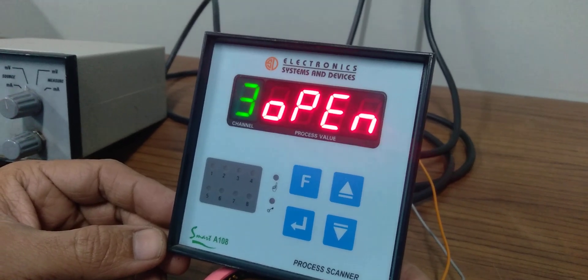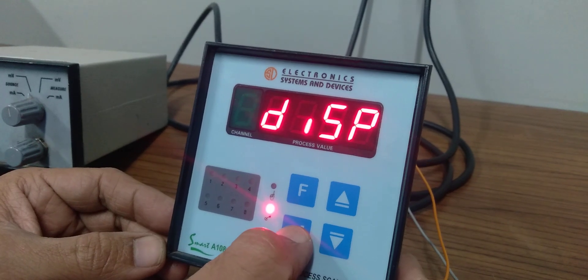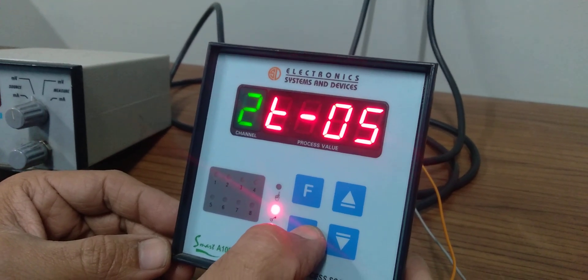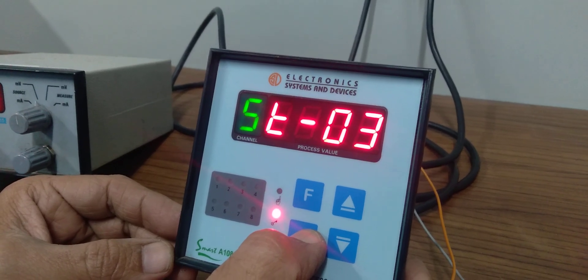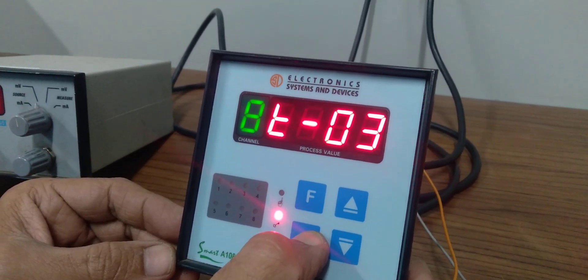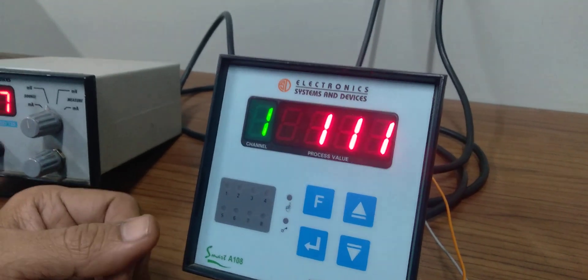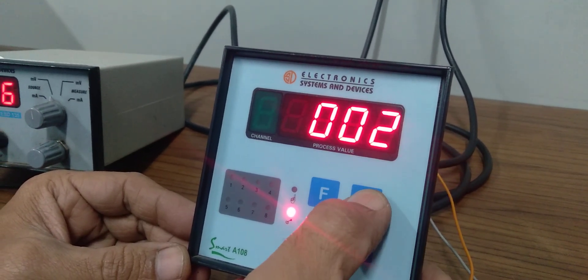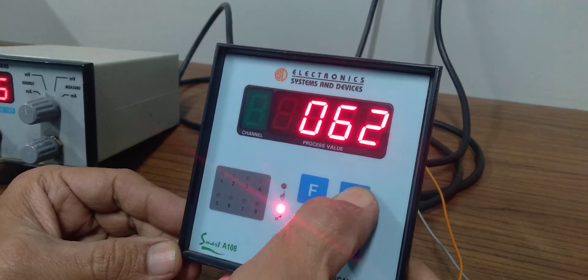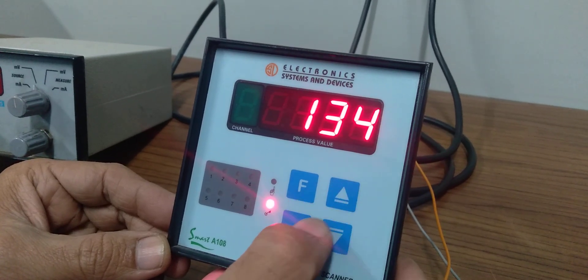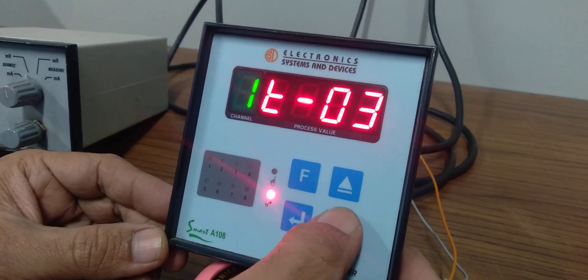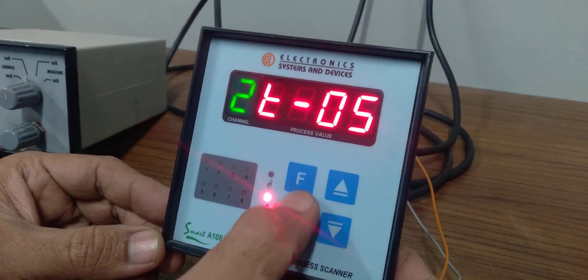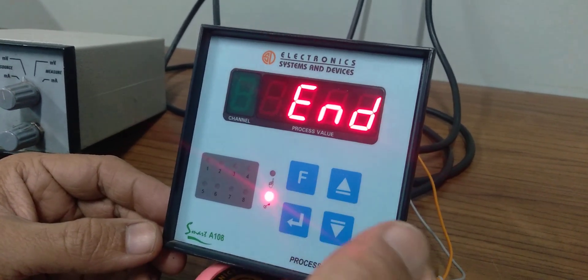We'll see the display times now. In the display option, you can set the time for each channel, how many seconds it should show. The minimum is three seconds. If you want to skip any particular channel, you can set it to zero. The default password is 134. We'll skip channel one. After entering the password and setting it to zero, press enter, and this particular channel will get skipped. Now it will start from channel two directly.